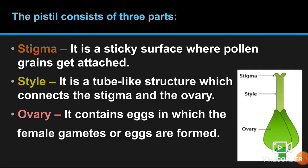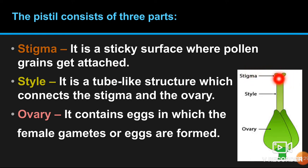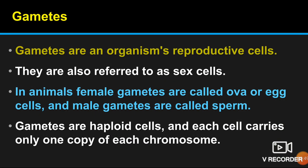The pistil consists of three parts: stigma, style, and ovary. The stigma is a sticky surface where pollen grains get attached. It is like a gum or glue material secreted by the flower. The pollen grain comes from the anther, gets deposited on the stigma, then grows and travels down through the style into the ovary, where it fuses with the ovules.